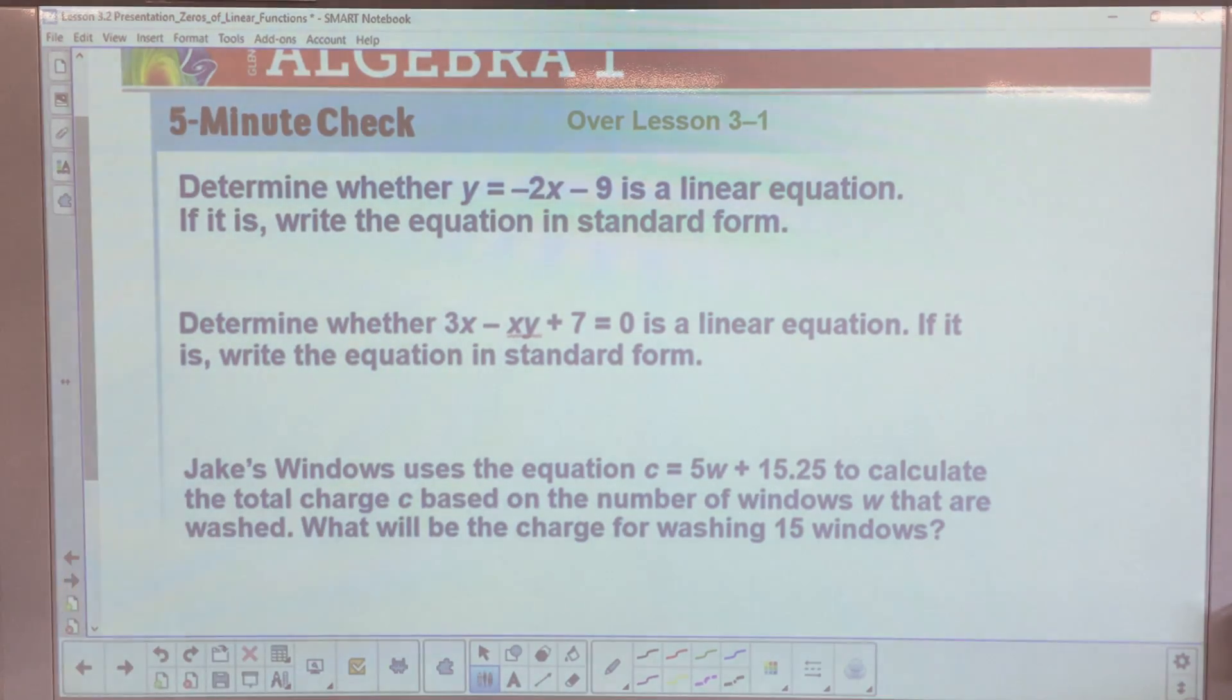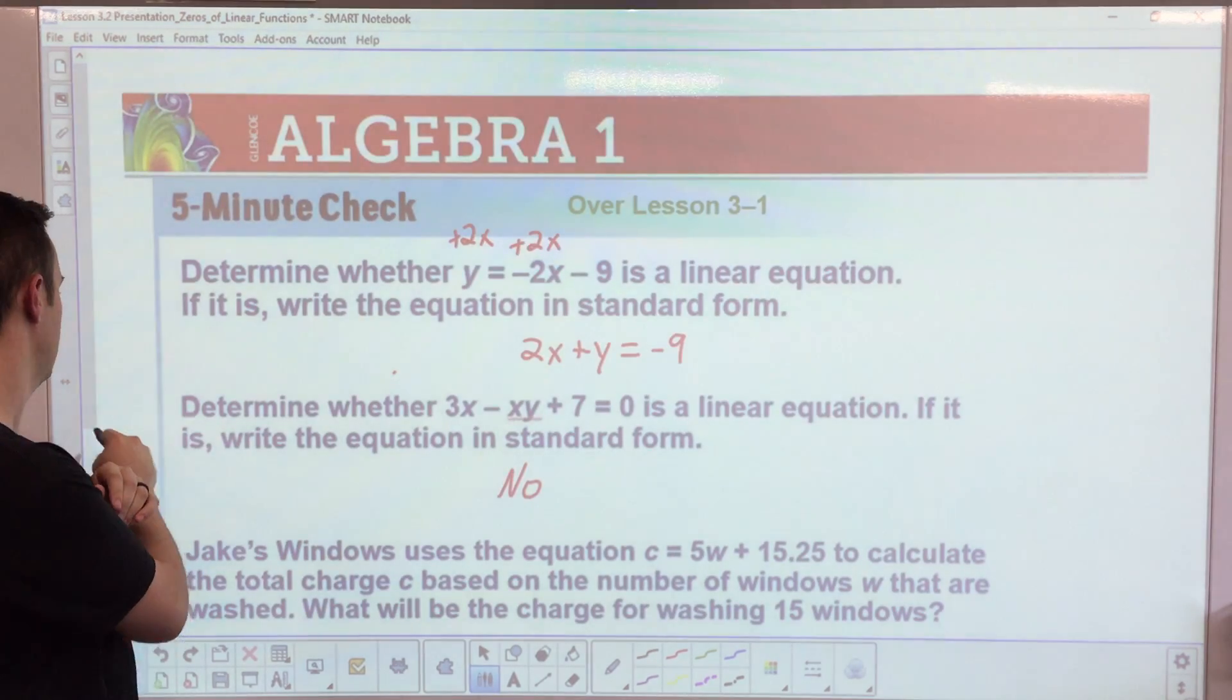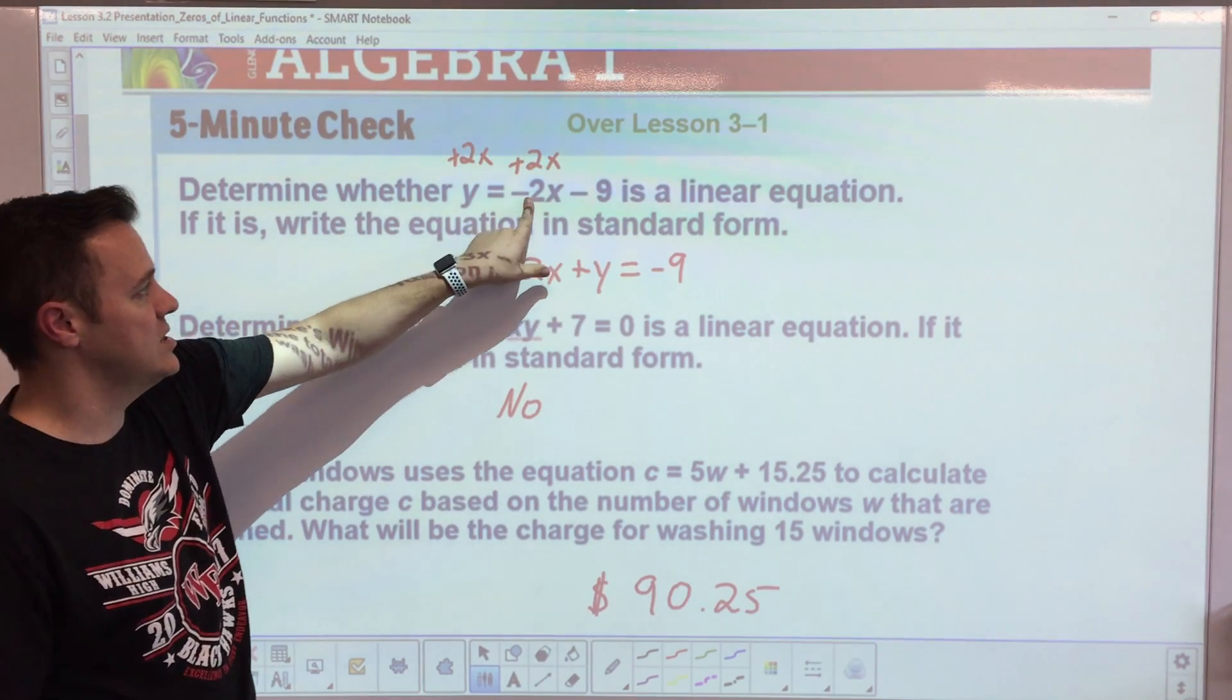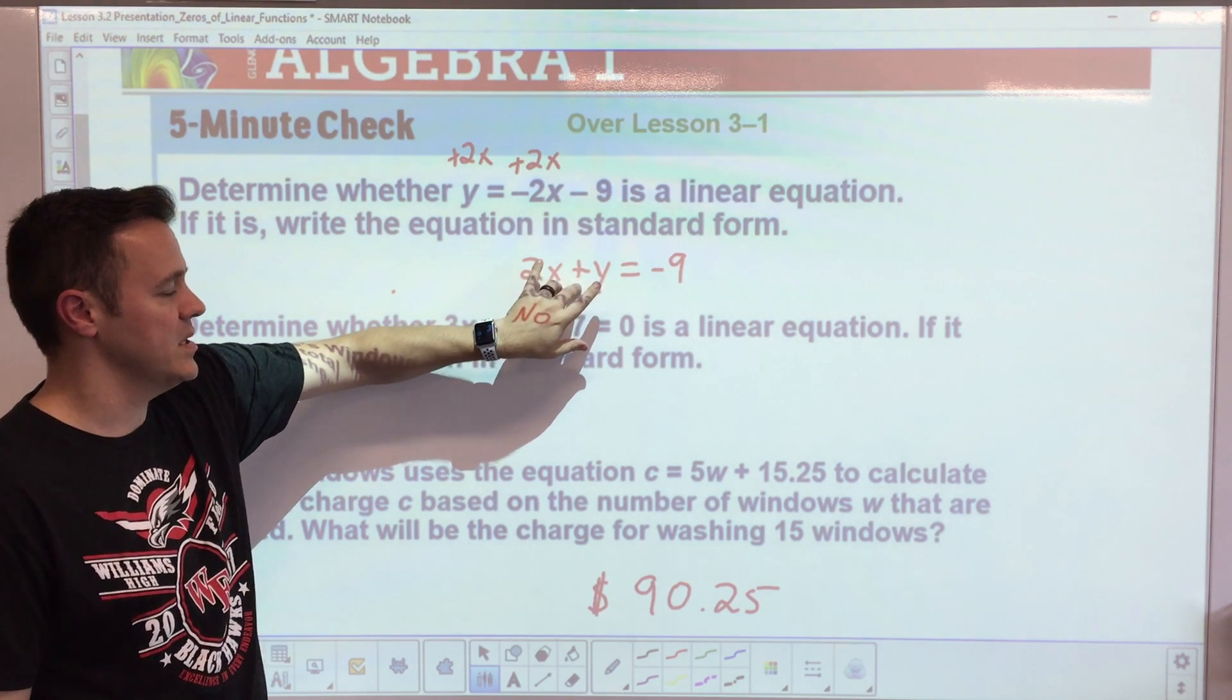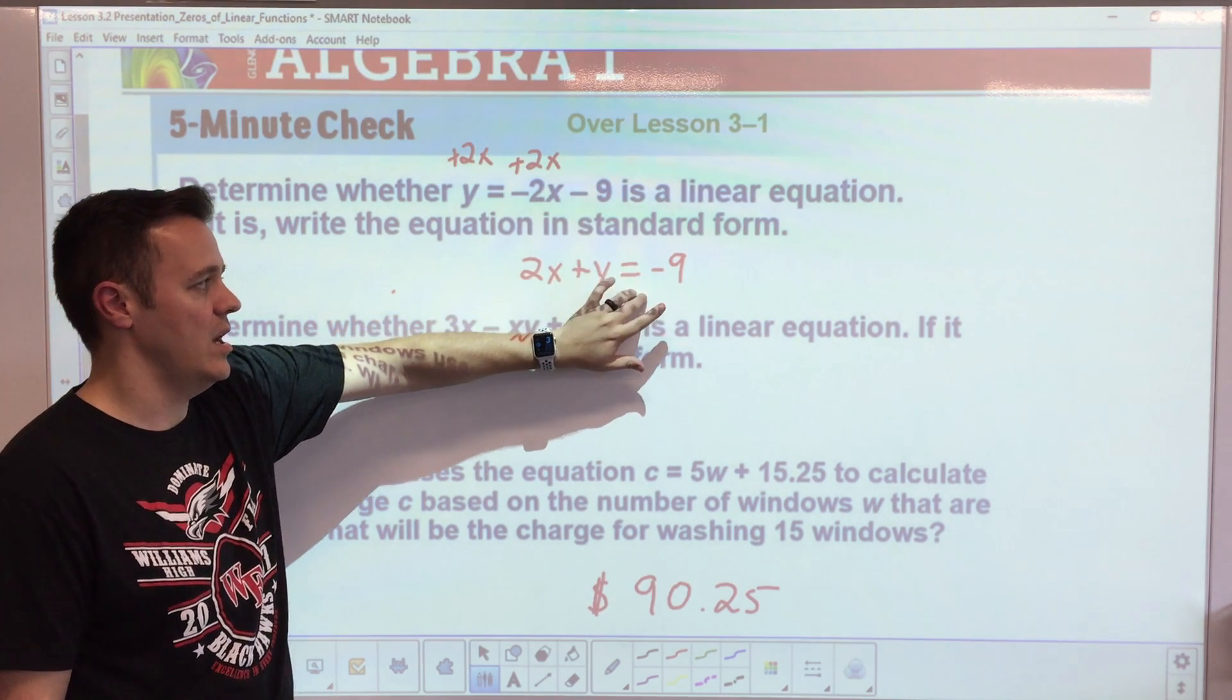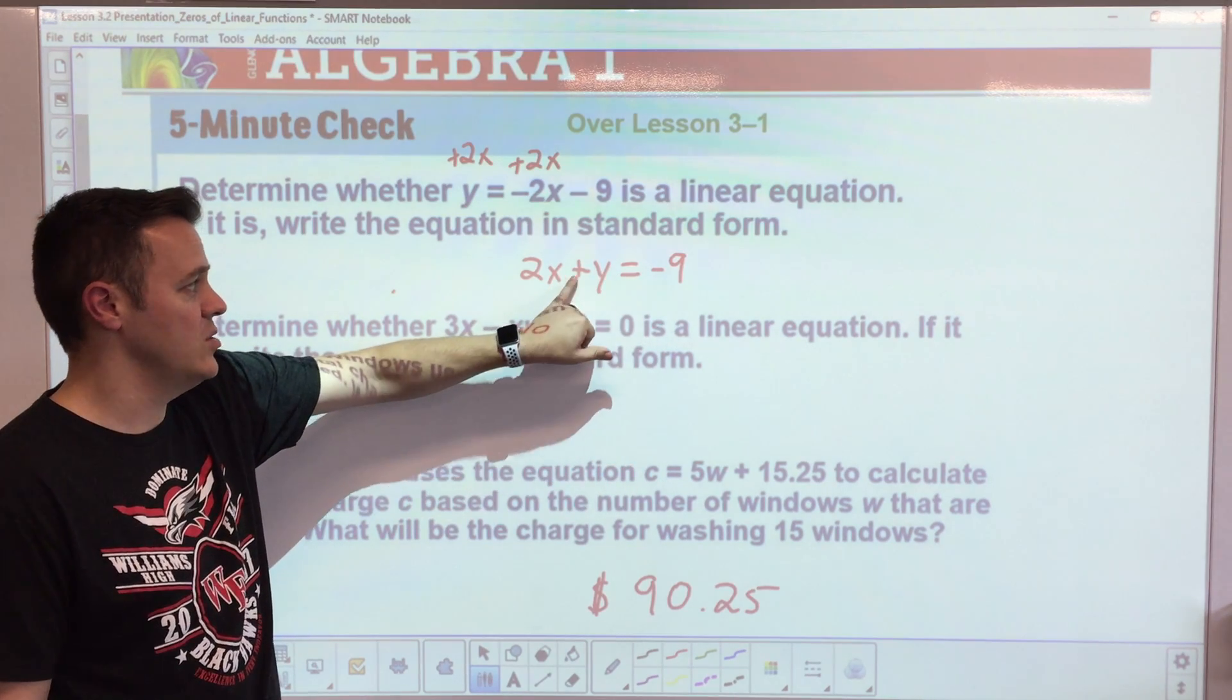Bell work is required for chapter 3, so please make sure you fill it out in the worksheet. Here are the answers. First one here in standard form: add 2x to both sides. Standard form is ax plus by equals c, so it'd be 2x plus y equals negative 9.